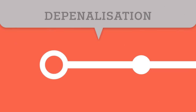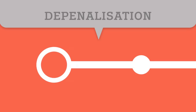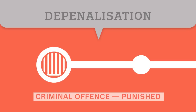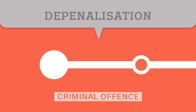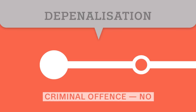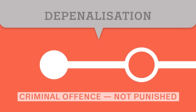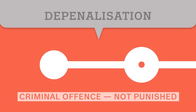The first term we'll look at is Depenalisation. This is where something that was a criminal offence that was usually punished is changed so that it remains a criminal offence, but now as a mechanism deciding that it's usually no longer punished. The case may be closed or suspended, it may be considered minor, or it may be decided that it's not in the public interest to prosecute.